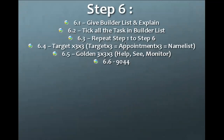So this is Step 6: Give the Builder List as explained, if the prospect is positioning as a builder. Step 6.1 is the sharing session I just explained — you can separate it into two or three days, it's up to you and depends on the situation. Step 6.2: take all the tasks in the Builder List. Step 6.3: repeat Step 1 to Step 6. Your steps are very simple — once you learn these seven or eight steps, you just repeat them again and again.